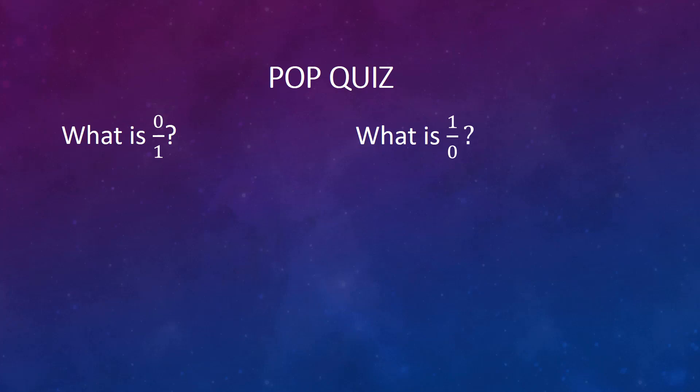Let's start with zero over one. Zero divided by one is zero. In general, zero divided by any number except zero itself is zero. Zero divided by zero, however, is undefined.